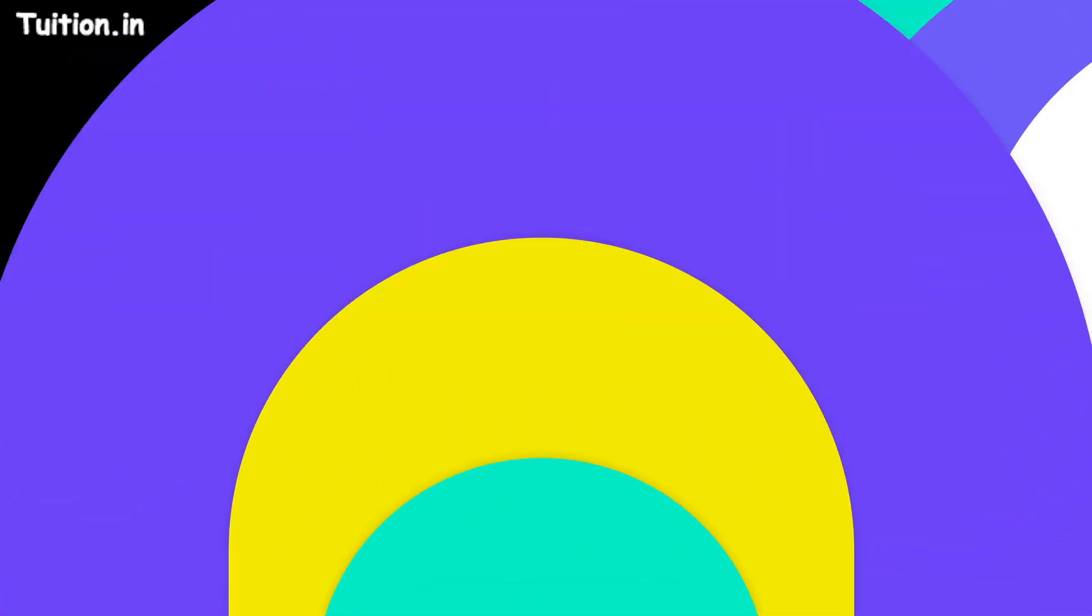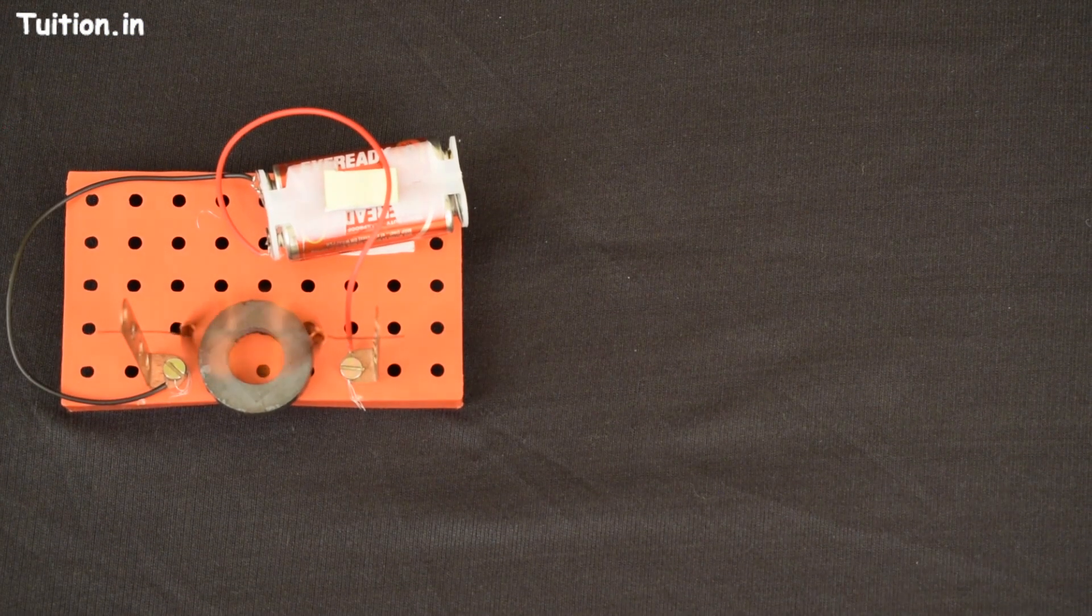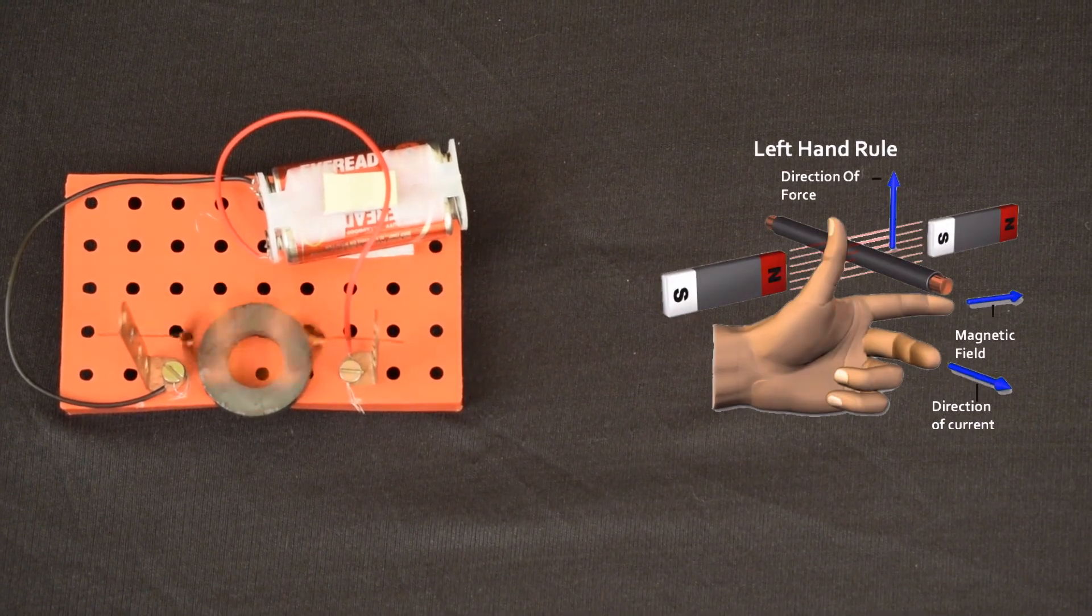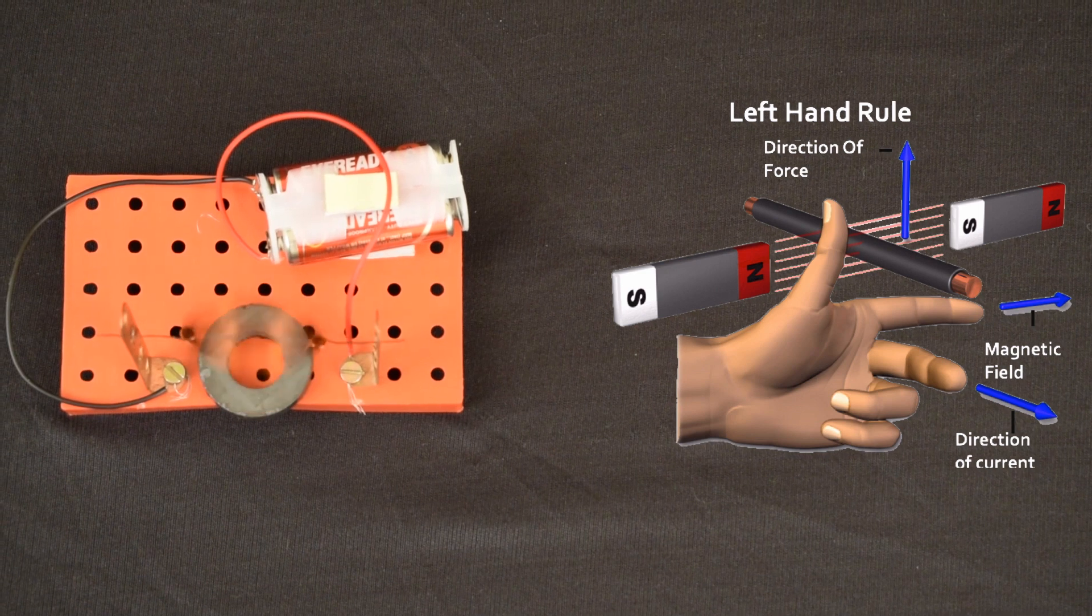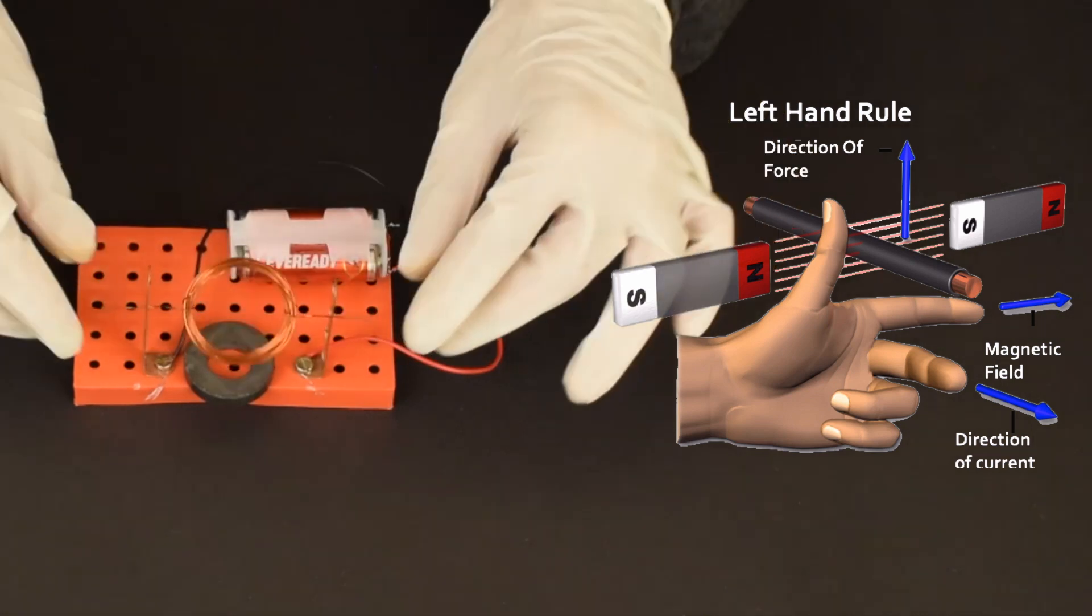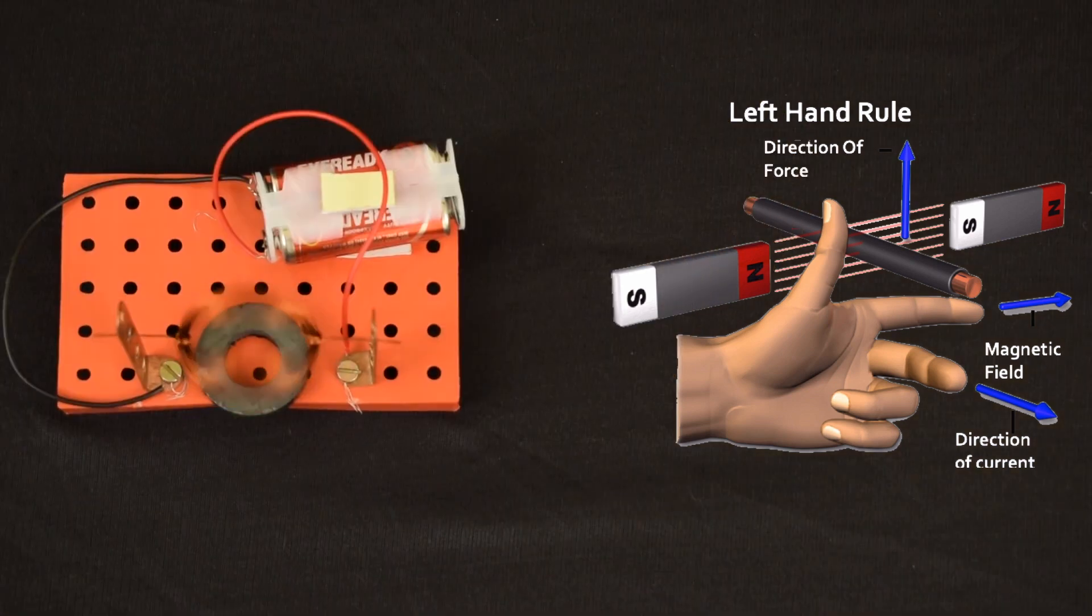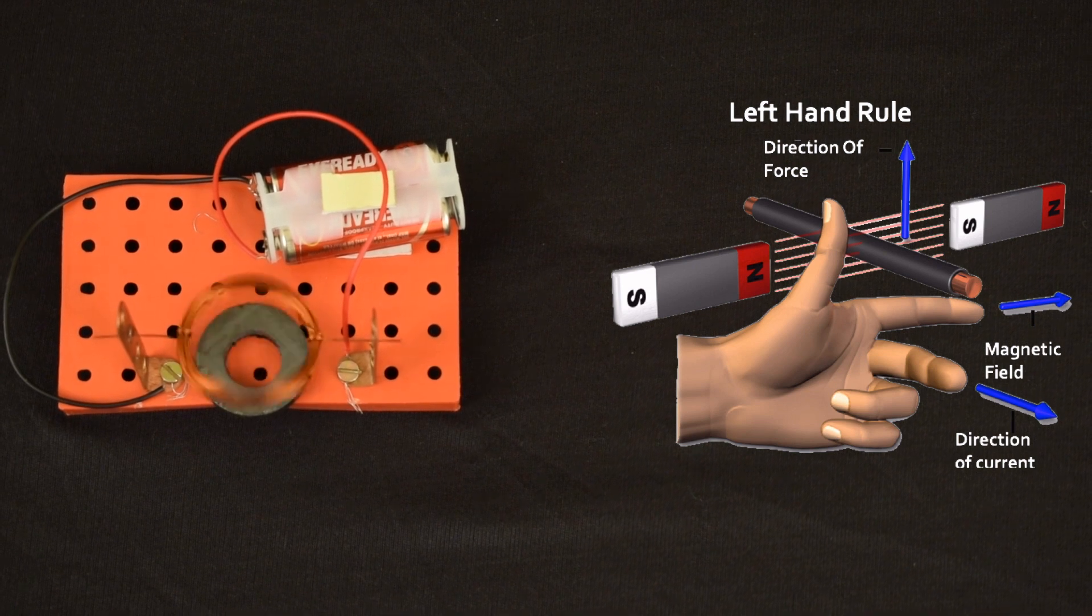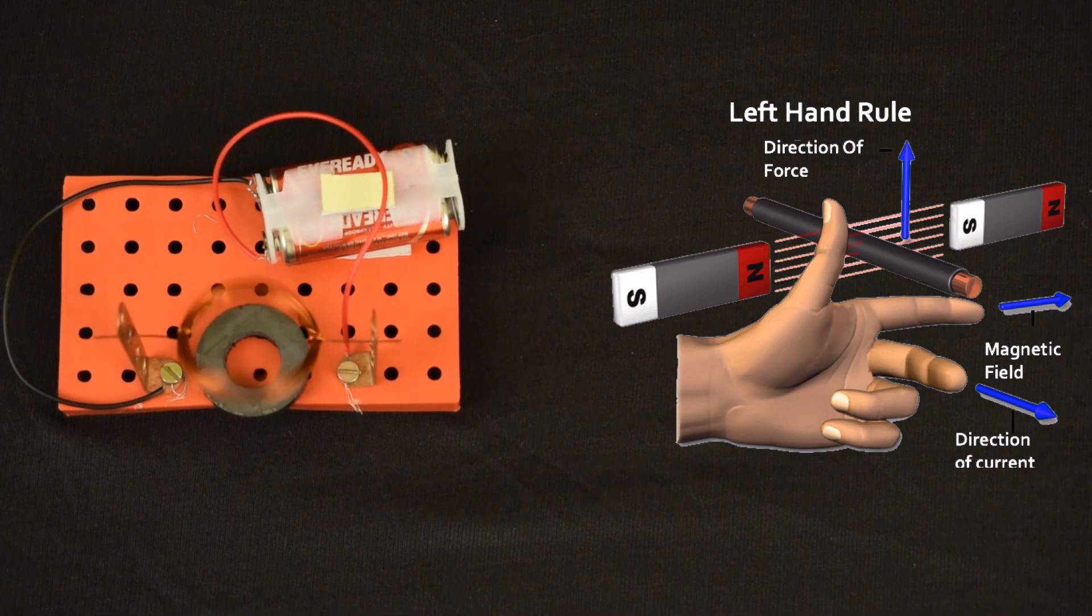Explanation. DC motor obeys Fleming's left hand thumb rule. When a current carrying conductor is placed in an external magnetic field, it will experience a force called Lorentz force. Due to this force, torque is produced, which rotates the coil.